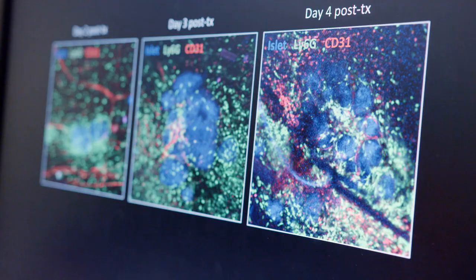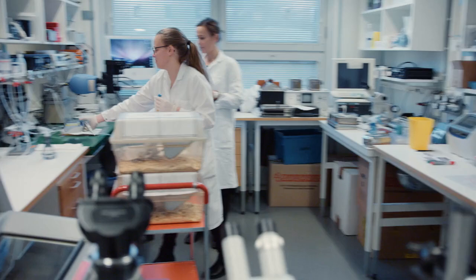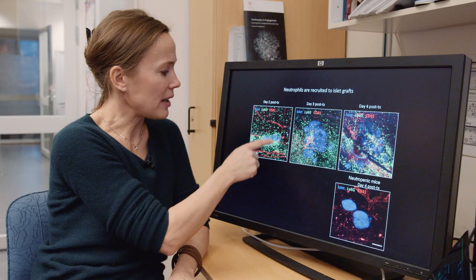She studied blood vessel development with transplants in diabetics, where there is a risk that the new insulin-producing islets of Langerhans get too little oxygen and die. And we could see that these sites were swarmed by immune cells that accumulated at the site of hypoxia.